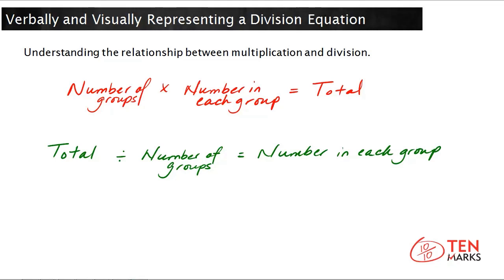In a multiplication sentence, you find the total. In a division sentence, you start with the total, and in this case, divide it by the number of groups to find the number in each group. There's also a second way you can think about a division sentence. You could also divide the total by the number in each group, and that division sentence solves for the number of groups.